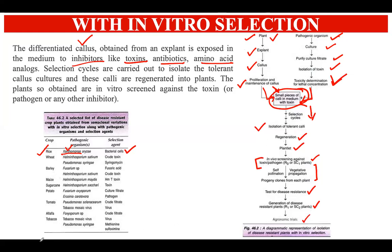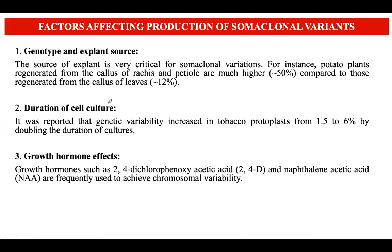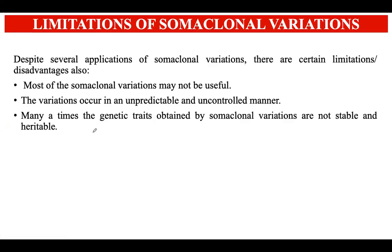Several factors affect the production of somaclonal variants. First is the genotype and explant source — the source of explant is very critical. For example, in potato plants, those regenerated from the callus of petioles and rachises showed much higher somaclonal variation compared to those regenerated from callus of reeds. The duration of cell culture also matters — longer duration increases the probability of somaclonal variations. Additionally, growth hormones affect the occurrence of somaclonal variants.